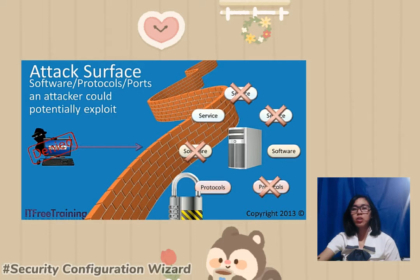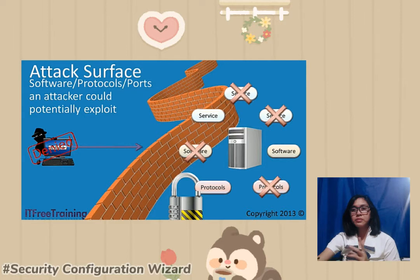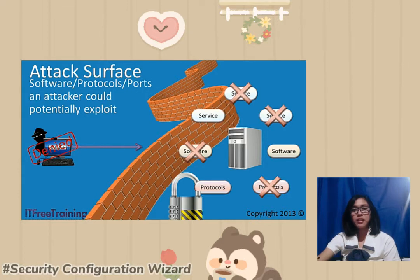The access is getting denied because there is a wall. That wall represents the firewall. The firewall also contributes to protecting the server from hackers, so the hacker cannot get inside or exploit data because of the firewall.